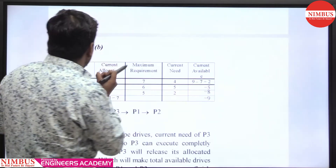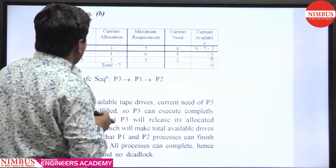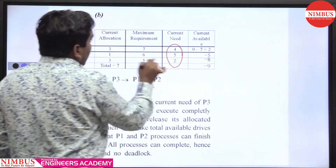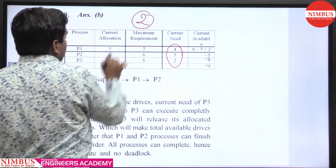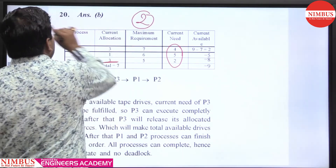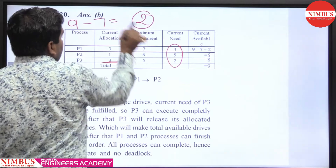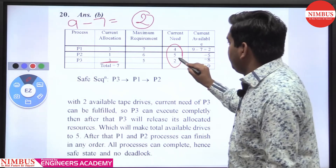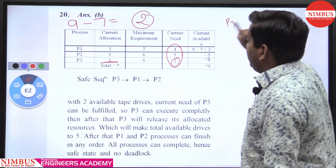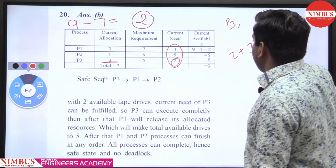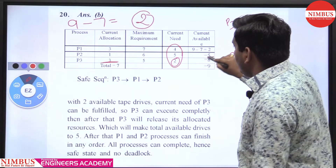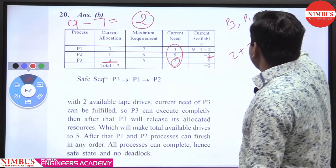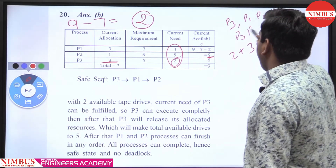To recap: current allocation is given, maximum requirement is given, and we calculate the current need. Available is 2 because total is 9 minus 7 allocated equals 2. From this 2, we satisfy P3 first. P3 adds 2 plus 3 giving 5 available. From 5, we can satisfy either P1 or P2, in any order.